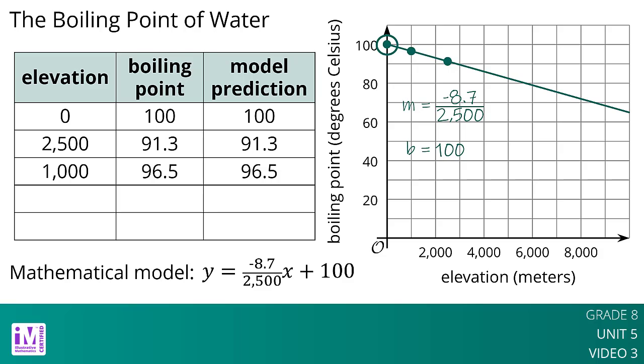For higher elevations, the model is not as accurate, but it is still close. At 5,000 meters above sea level, it predicts 82.6 degrees Celsius, which is 0.6 degrees Celsius off the actual value of 83.2 degrees Celsius. At 9,000 meters above sea level, it predicts 68.7 degrees Celsius, which is about 3 degrees Celsius less than the actual value of 71.5 degrees Celsius.